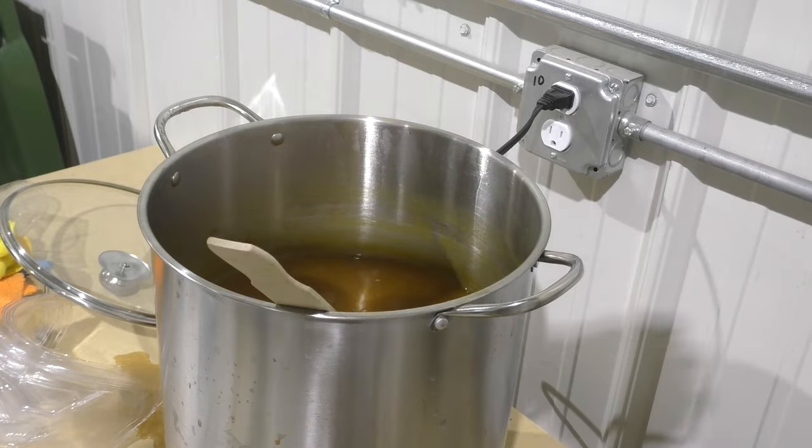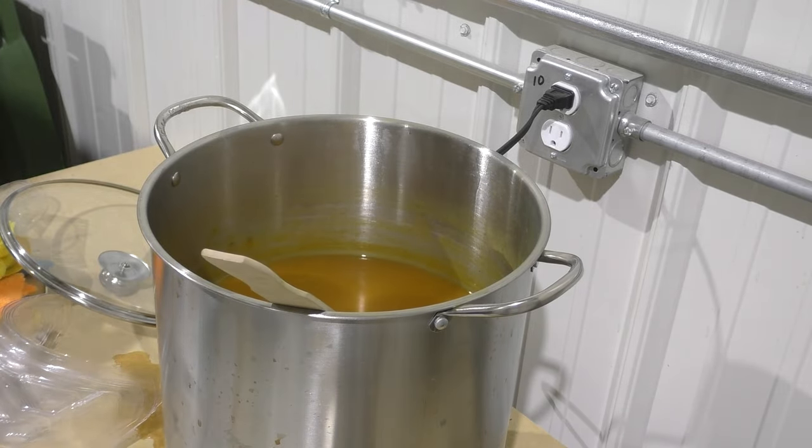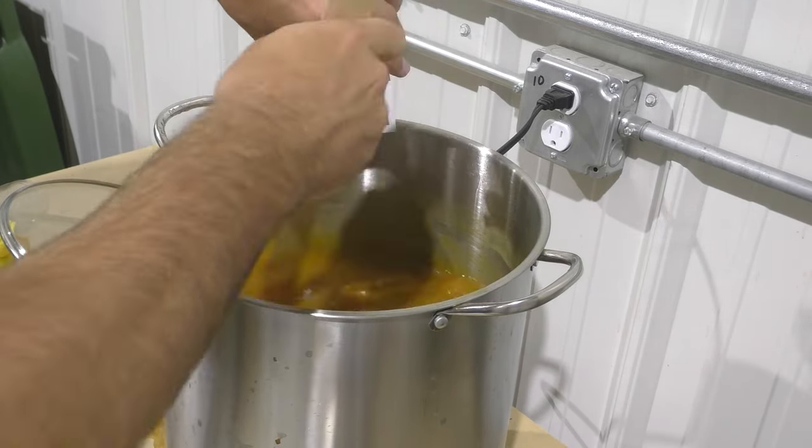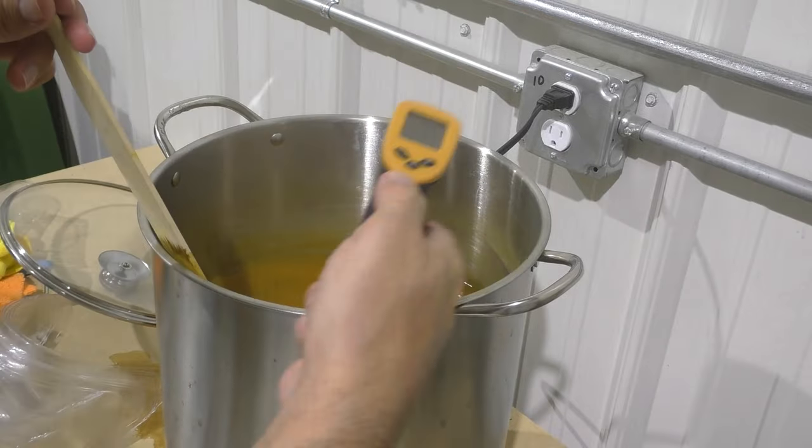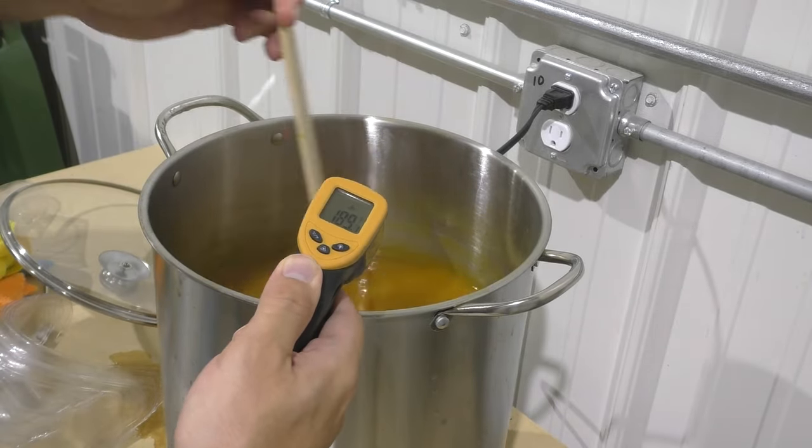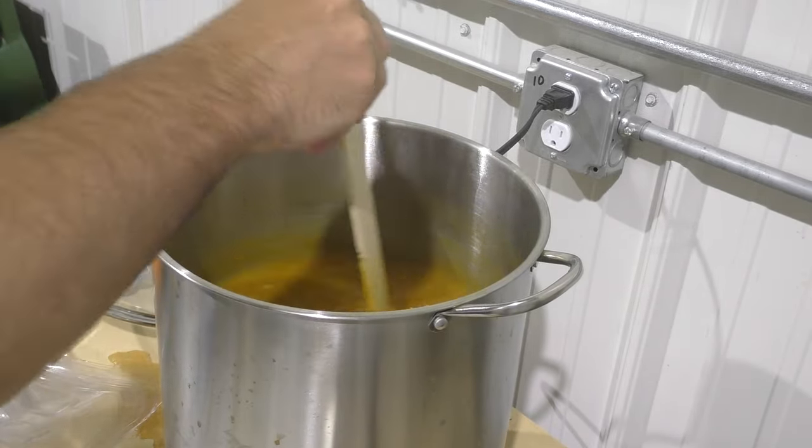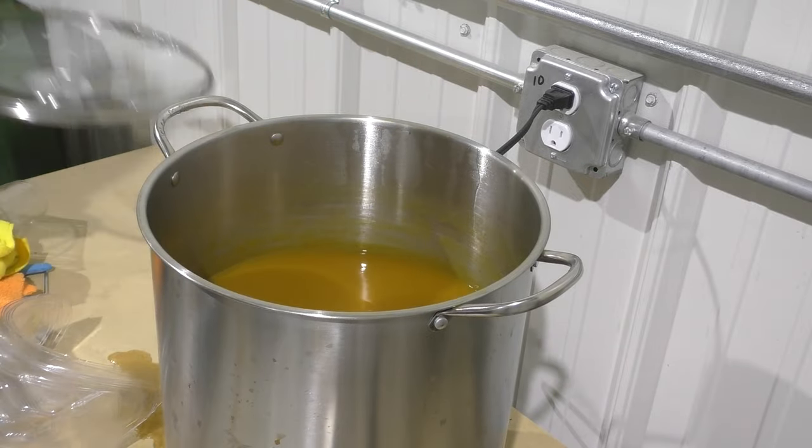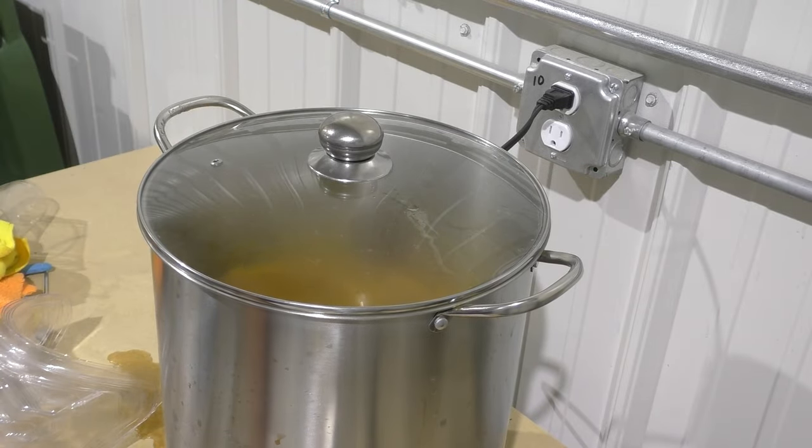Once we're there, we need to wait for this water to cool back down, because otherwise if we put our visors in right now they would warp and misshape. We want to wait until the water is about 140 to 150 degrees Fahrenheit - that's the temperature that is safe for PETG. So we'll come back in around half an hour after this thing is cooled a bit.